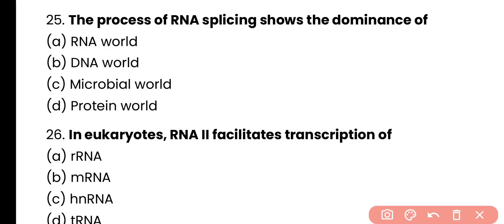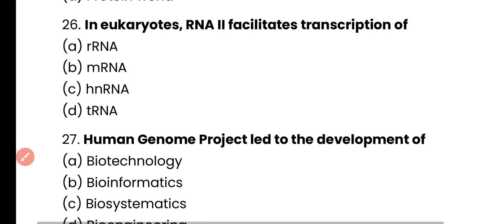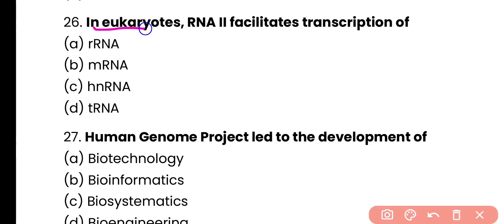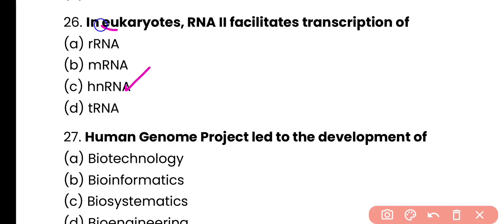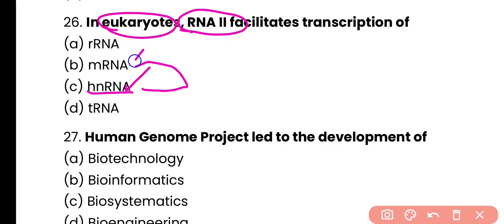Question number 26. In eukaryotes, RNA polymerase 2 facilitates the transcription of ribosomal RNA, messenger RNA, hnRNA, or transfer RNA? Correct answer is option C. In eukaryotes, RNA polymerase 2 facilitates the transcription of heterogeneous nuclear RNA (hnRNA), which is a precursor to messenger RNA.